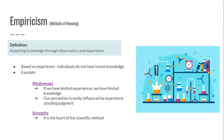A weakness of empiricism is that if someone has limited experiences, they will have limited knowledge. Imagine someone who was shut up in a single room their entire life — their knowledge would be extremely limited because they haven't experienced anything. Similarly, our perception is very easily influenced by experience: we may perceive something one way based on one experience, and then have a completely new experience that changes our perception in an instant. This makes it easy to have our judgment clouded, where we think we know something one way, then change our mind.